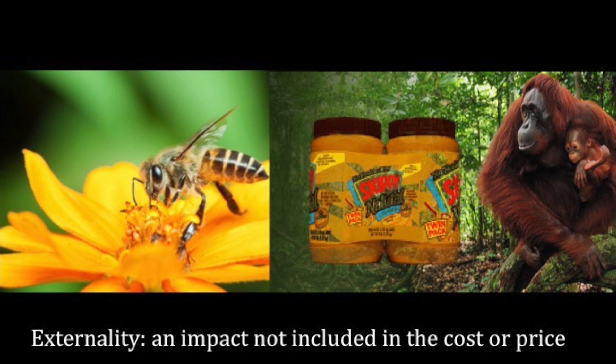Even if we care about them, things that are not included in our price system are not really considered in most of our day-to-day decisions. Who doesn't love orangutans and rainforests? But if the healthier peanut butter, which contains palm oil, is on sale for 30% off, we buy it — thus creating a tiny bit of market demand that businesses integrate into their plans for more palm plantations and thus less Indonesian rainforest. Orangutan loss is a negative externality of cheap peanut butter.